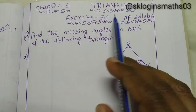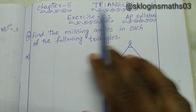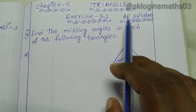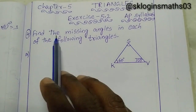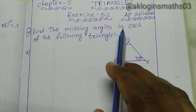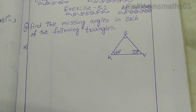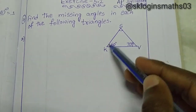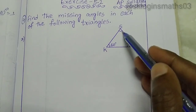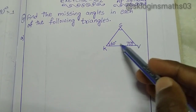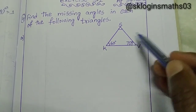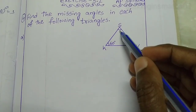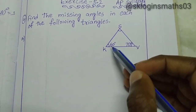Hi students, welcome to our channel. Triangles chapter 5, exercise 5.2, 7th class AP syllabus, fourth question: find the missing angles in each of the following triangles. A triangle has three vertices, three sides, and three angles. The interior angles add up to 180 degrees, and we need to find the remaining angle.